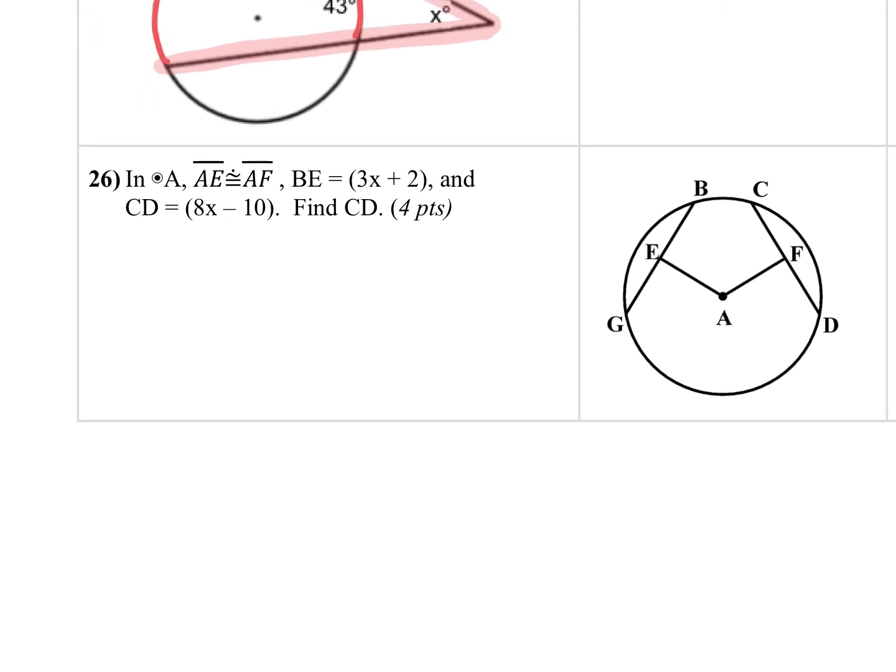The next one is a little bit trickier. This is going back to our chord-radius relationships. And we know that in a chord-radius relationship, if we are equidistant, which we are because AE is equivalent to AF, then we know that the chords are equivalent. So that means that BG is equal or congruent to CD. Well, it doesn't give me BG. It only gives me BE, 3x plus 2. And it gives me CD, which is 8x minus 10.